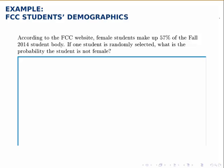According to the FCC website, female students make up 57% of the fall 2014 student body. If one student is randomly selected from the student body, what is the probability that that student is not female?